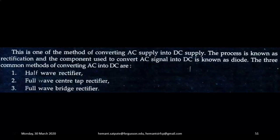Rectifier. A rectifier is an electronic circuit which converts an alternating current into unidirectional current. That means a circuit which converts AC into DC is known as a Rectifier.